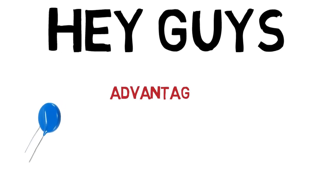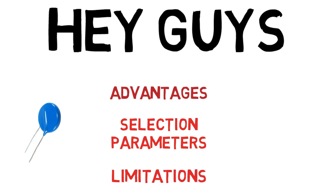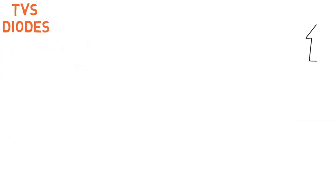In the last video, we have seen the working principle of the MOV, its advantages, selection parameters and limitations. To overcome those limitations, we can use the TVS diode. If you haven't seen the other video, I suggest you to have a look by clicking on this card.